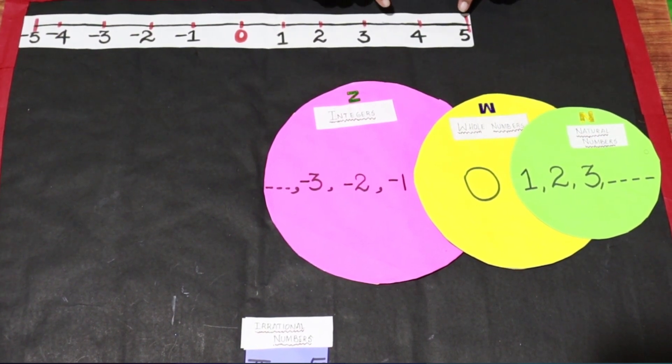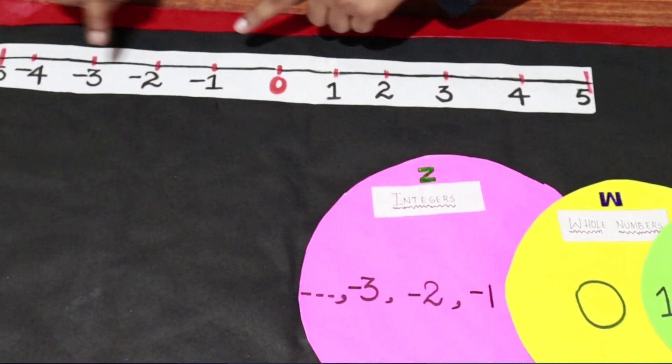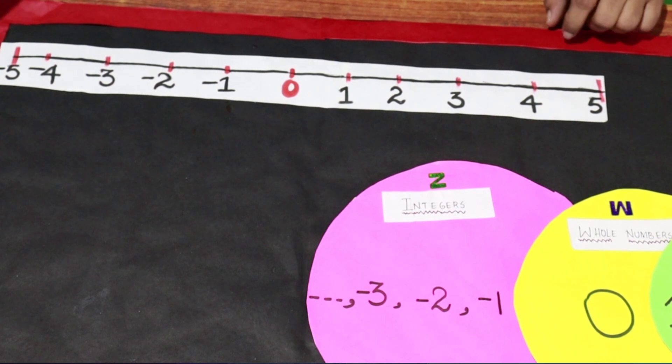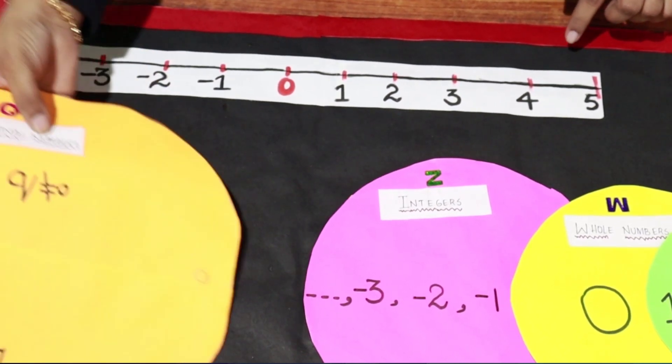Now, do we find numbers between these integers? Yes, we find many numbers between these integers. They are called rational numbers.